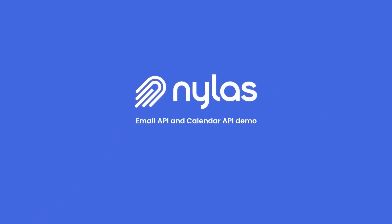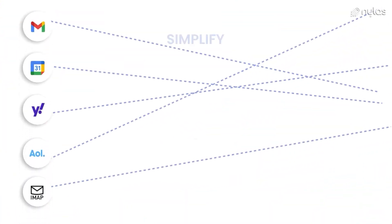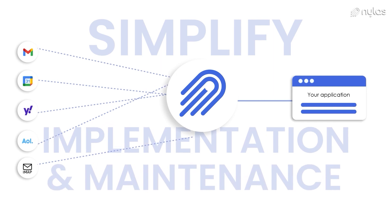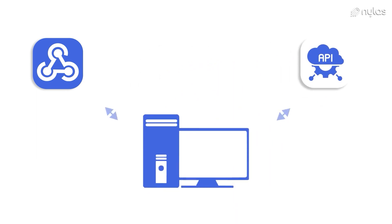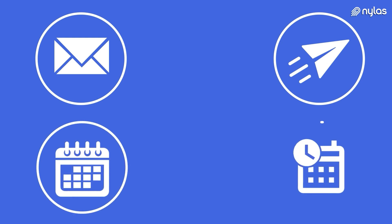Nylas is your one-stop shop for email and calendar integrations. We simplify implementation and ongoing maintenance complexities, providing uniform data through webhooks and REST-based APIs that empower your users to communicate and schedule directly in your app. Power up your application with embedded contextual email, automated outreach, calendar management, and scheduling automation.